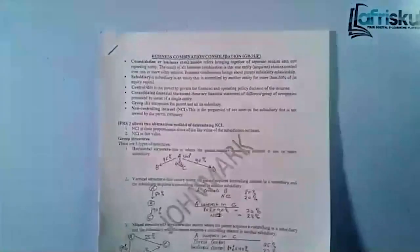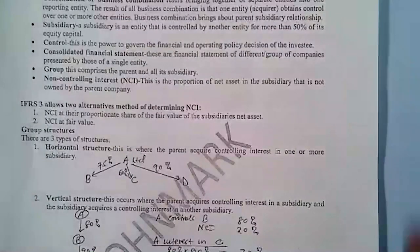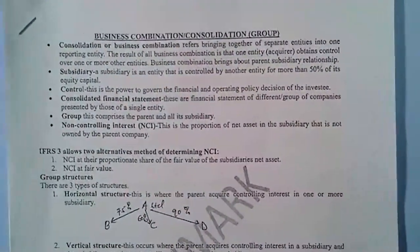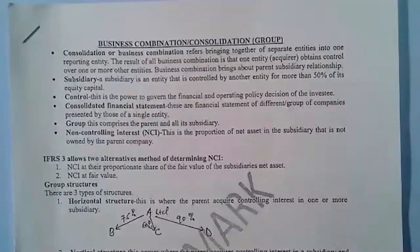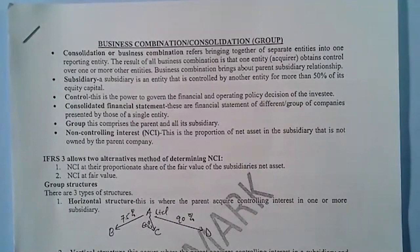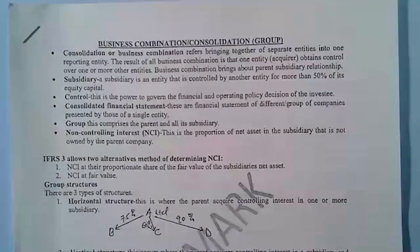That's the introduction to the group perspective. Now, after differentiating between a subsidiary and an associate, we need to look at consolidation. Consolidation of a business combination refers to the bringing together of separate entities into one reporting entity. The result of a business combination is that one entity acquires or obtains control over one or more other entities.